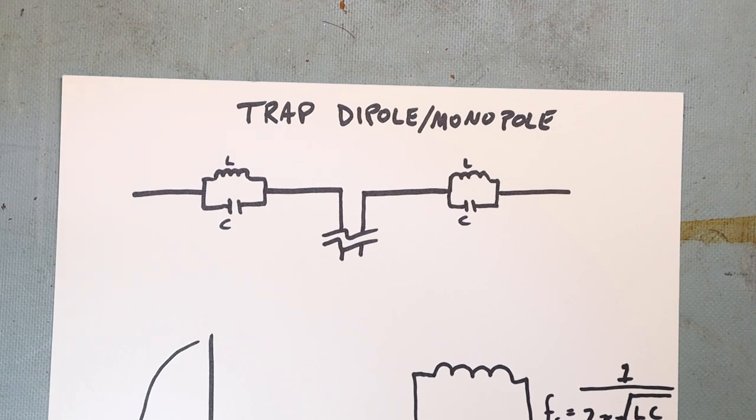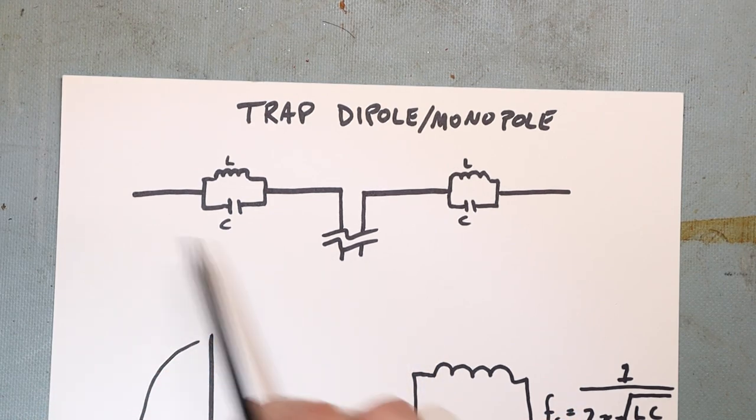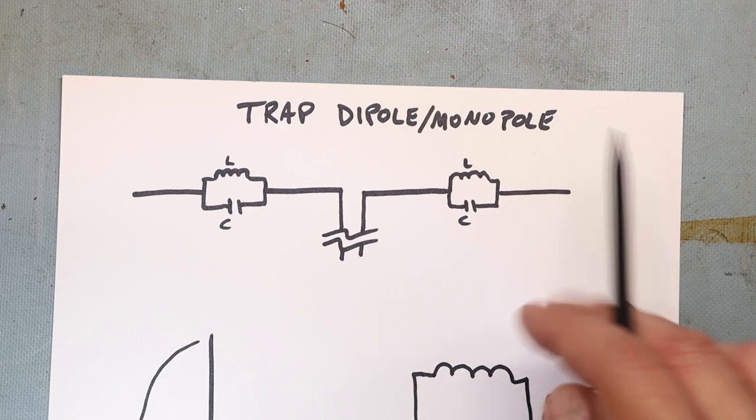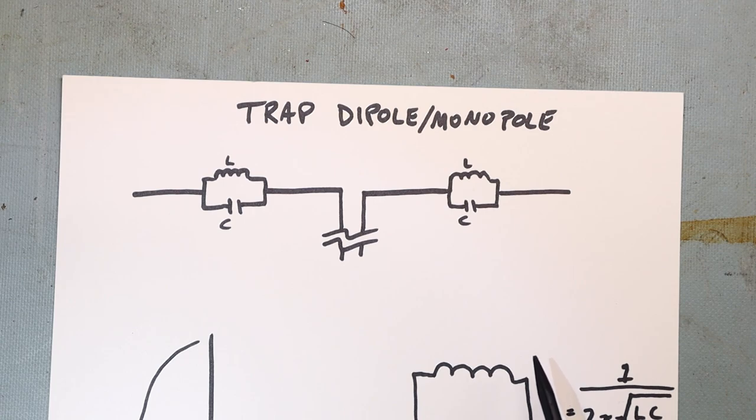Today I hope to answer the question what a trap dipole is. So we may have an instance where we want to install an antenna and we want to have a single wire that runs from point A to point B, fixed with dog bones or whatever, and we want to operate on multiple frequencies on that single wire element.